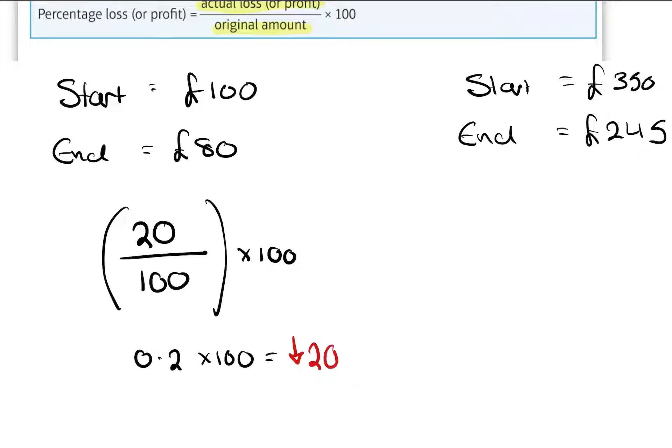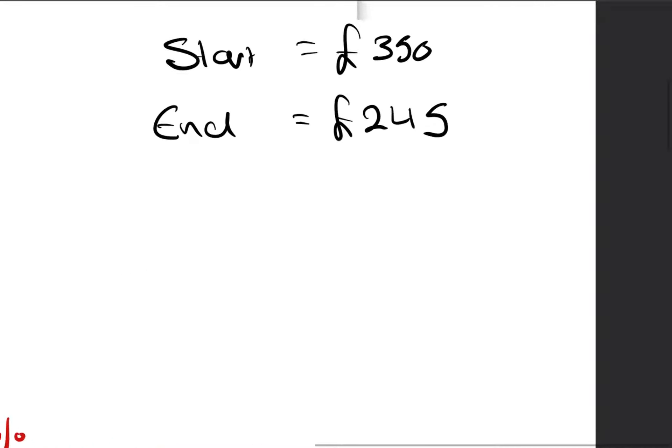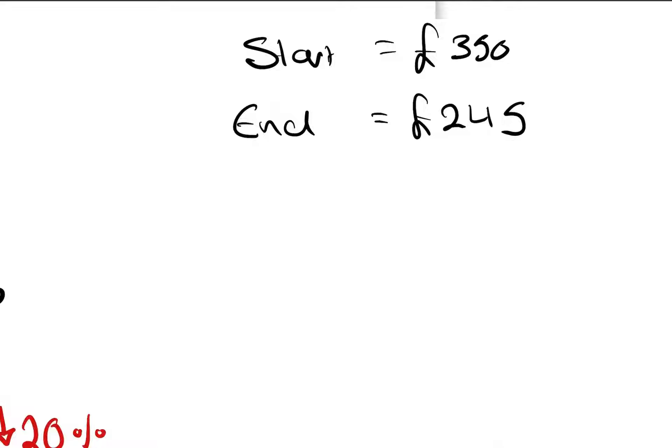This one here, start with £350 and we ended up with £245. So quickly, on the calculator I can see the change is £105 over our original amount, £350. So on your calculator, you're gonna do 105 divided by 350...